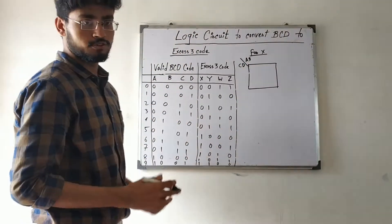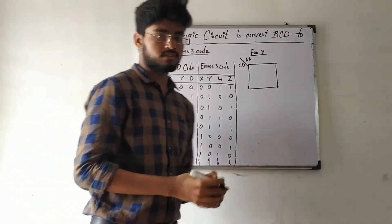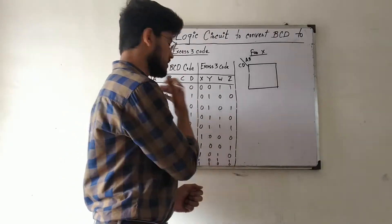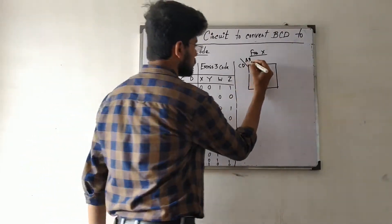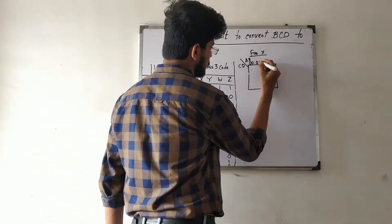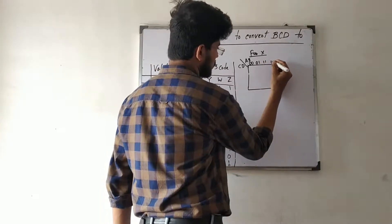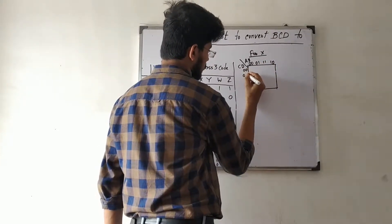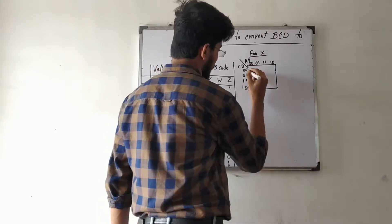You already know the procedure of how a K-map is formed. The columns are labeled 00, 01, 11, 10 for CD, and the rows are labeled 00, 01, 11, 10 for AB.